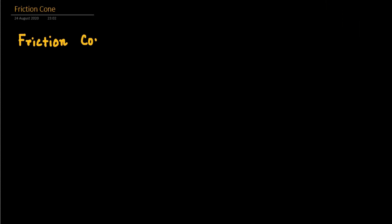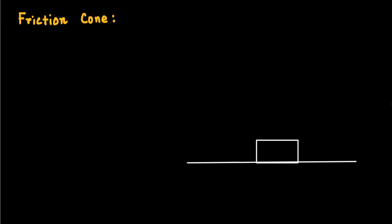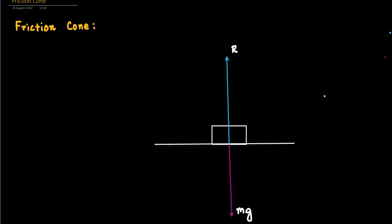What is a friction cone? In the diagram, a body is placed on a rough surface. Its weight mg acts vertically downwards from the lowest point of the body — though actually it should act from the center of gravity, for convenience it acts from the lowest point. The normal reaction R on the body, applied by the rough surface, acts from the lowest point in the vertically upward direction.